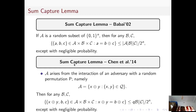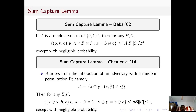The sum-capture lemma used in this paper is a variant proposed by Chen et al., which says that if this random subset A arises from the interaction of an adversary with a random permutation P — namely A is the set {x + y} where x is the input and y is the output of an interaction — then for any subsets B and C of {0,1}^n, the cardinality of tuples where x + y = b + c is at most Q · |B| · |C| / 2^n, which is very low.